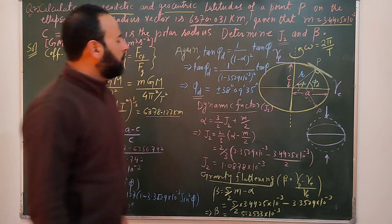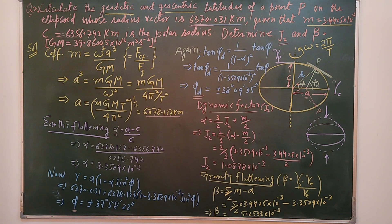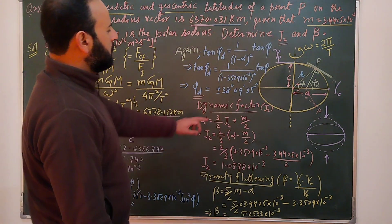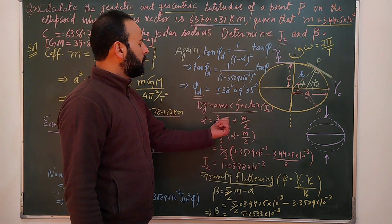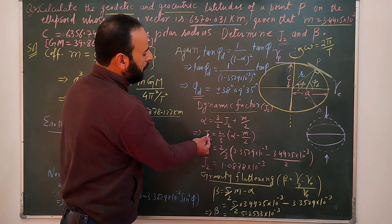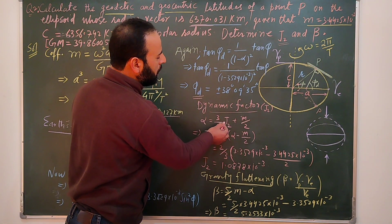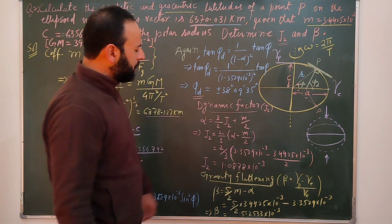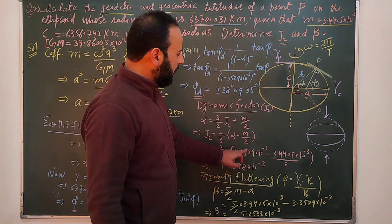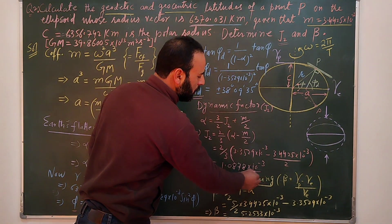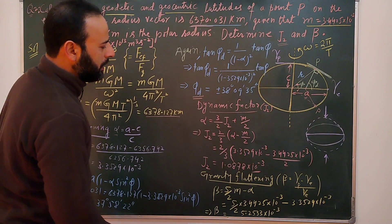The dynamic factor J2 is related to flattening by: α = (3/2)J2 + m/2. Rearranging gives J2 = (2/3)(α − m/2). Substituting the values of α and m, we calculate the numerical value of J2, which is the dynamic form factor of the Earth.